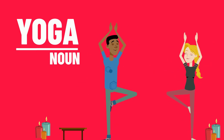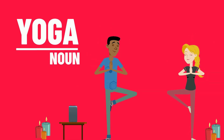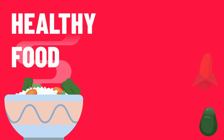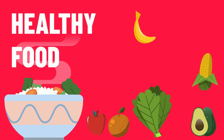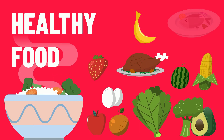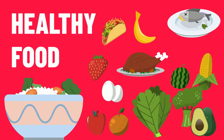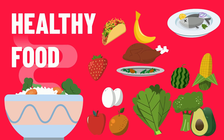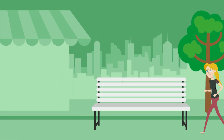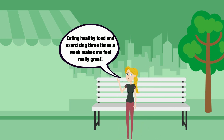An activity which gives us great exercise is yoga. This form of exercise comes from ancient India and is great for physical, mental and emotional wellness. It is really important to eat healthy food. Eating lots of fruit and vegetables and having a balanced diet is the key to having a healthy body. Example: Eating healthy food and exercising three times a week makes me feel really great.